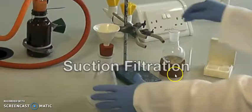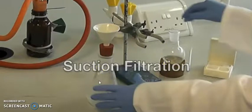Before that, you have your sample here, you want to filter this one. Make this setup. This is an Erlenmeyer flask, rubber tubing, and then Buchner funnel.